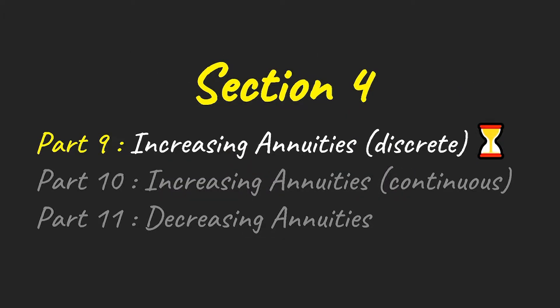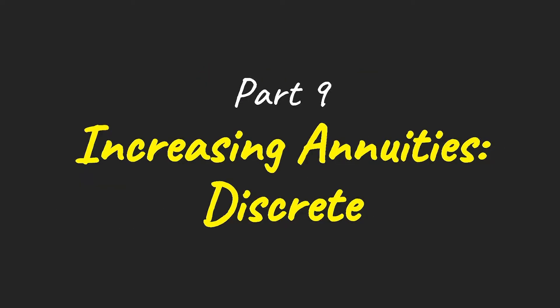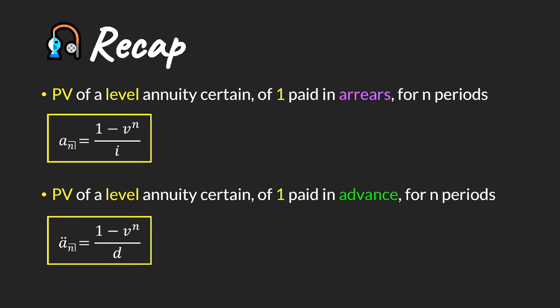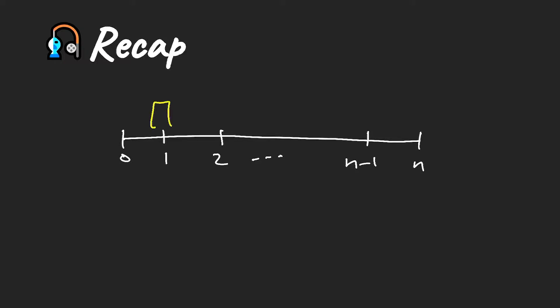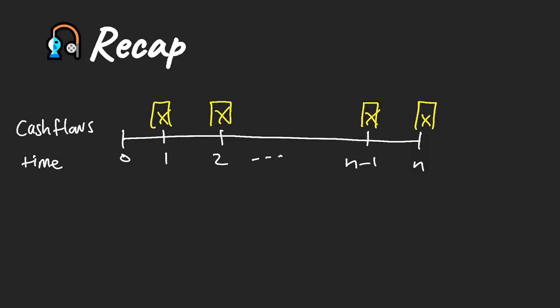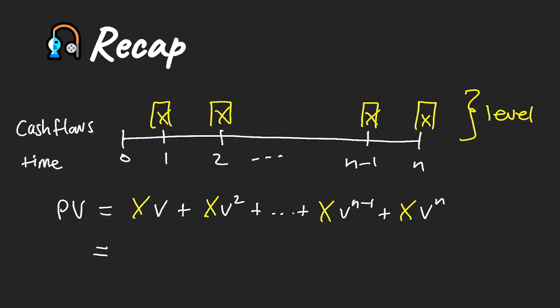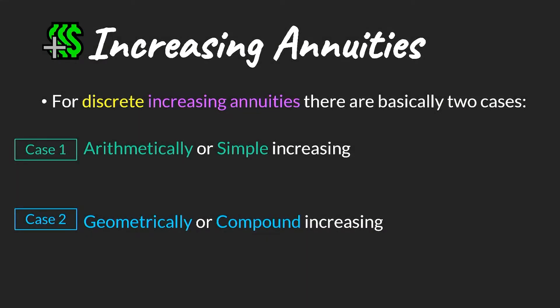In this video we'll be looking at increasing annuities paid in discrete time. To recap, previously we looked at finding the present value of a level annuity where the cash flows were level throughout the period. We looked at payments made in arrears as well as payments made in advance, and came up with two formulae. When working out these formulas we showed cash flows on a timeline, wrote out the discounted cash flows, pulled out a common factor, and simplified using actuarial notation for an annuity paid in arrears.